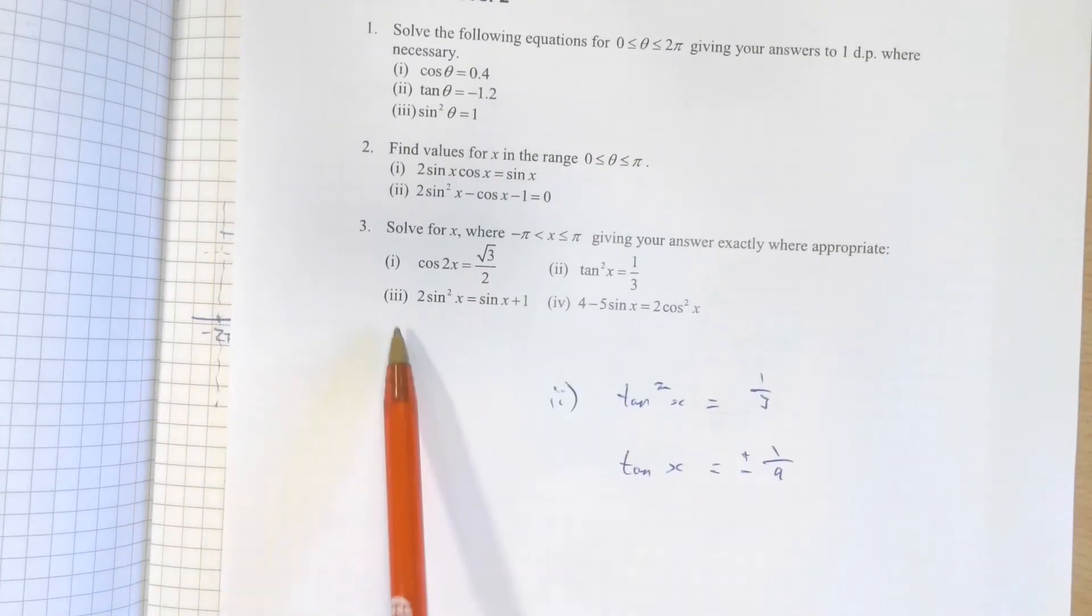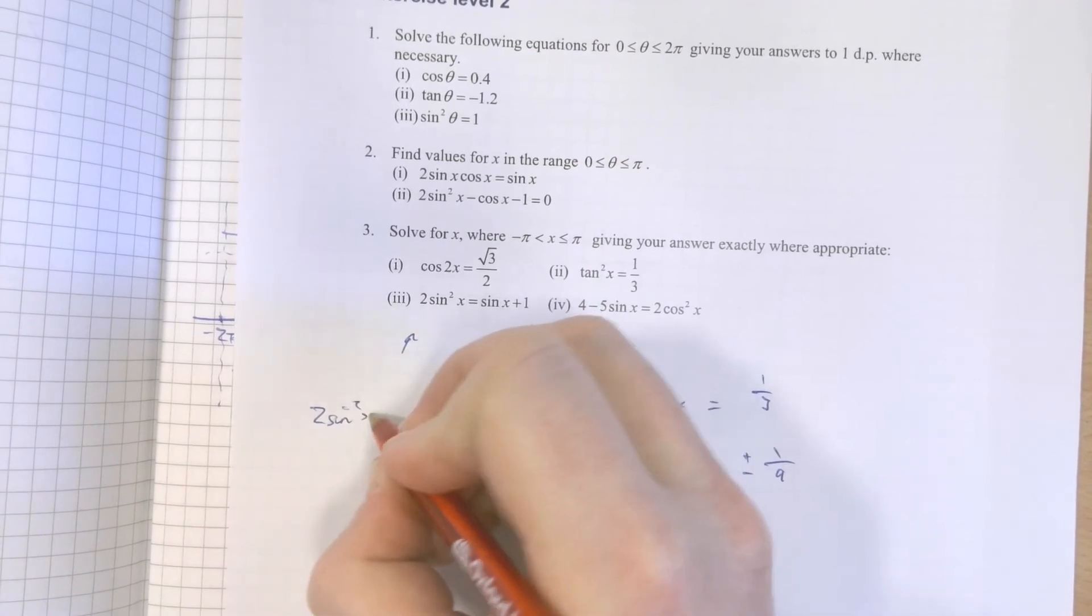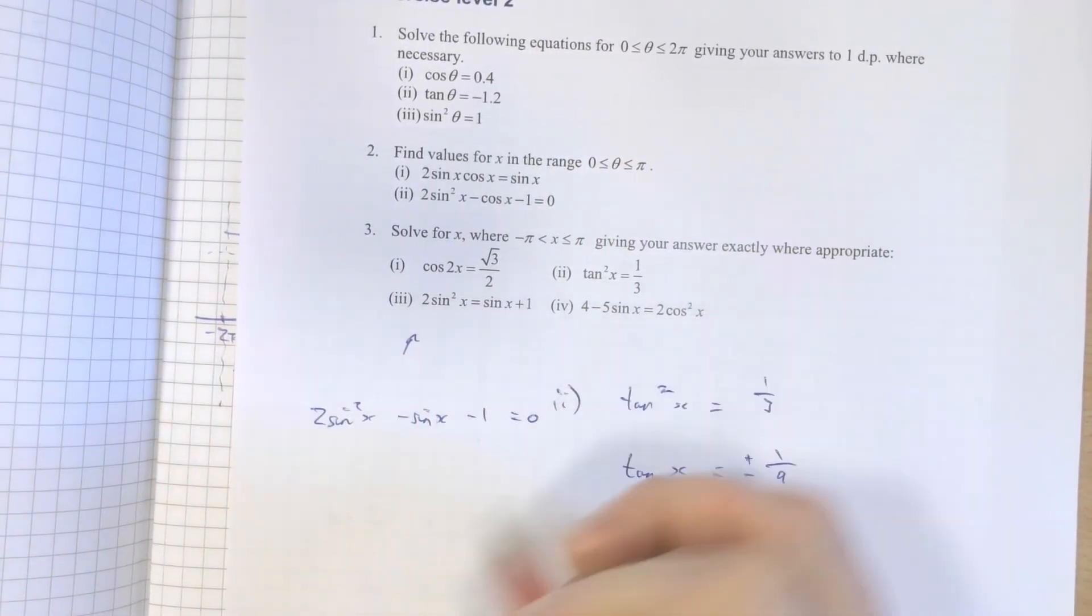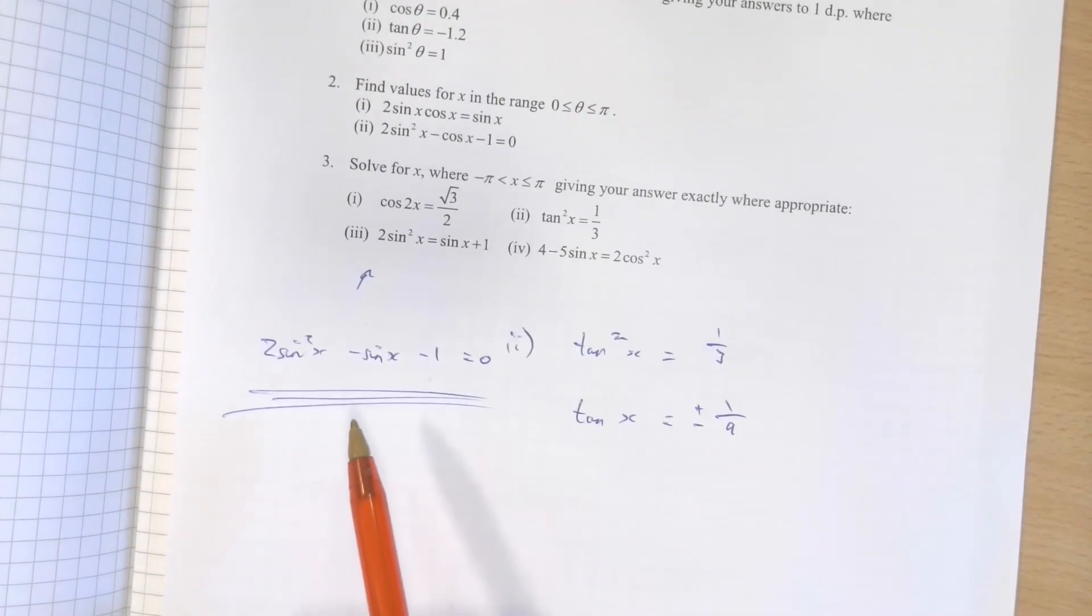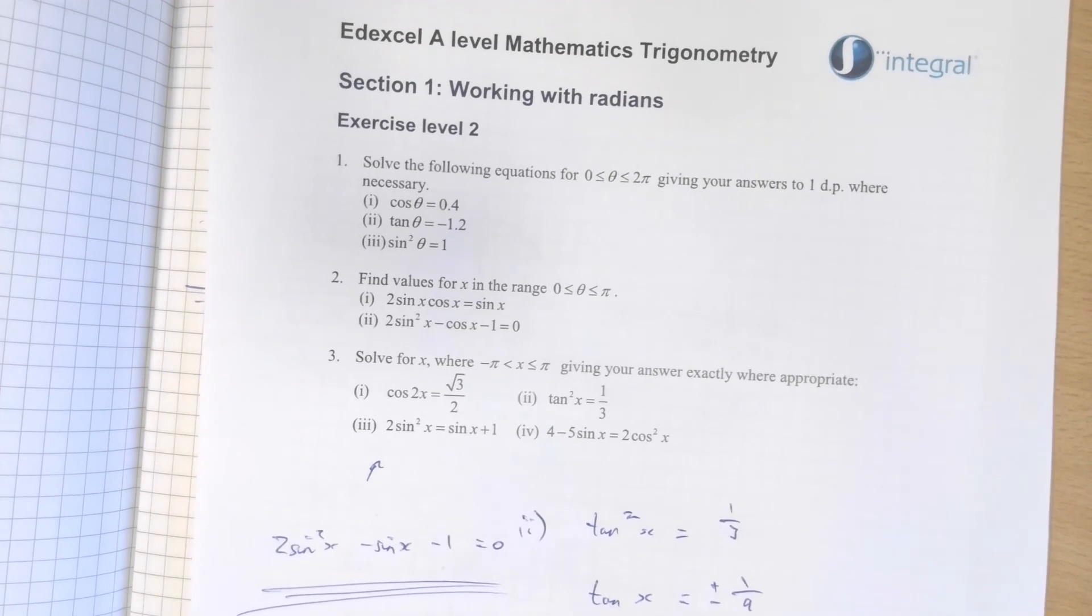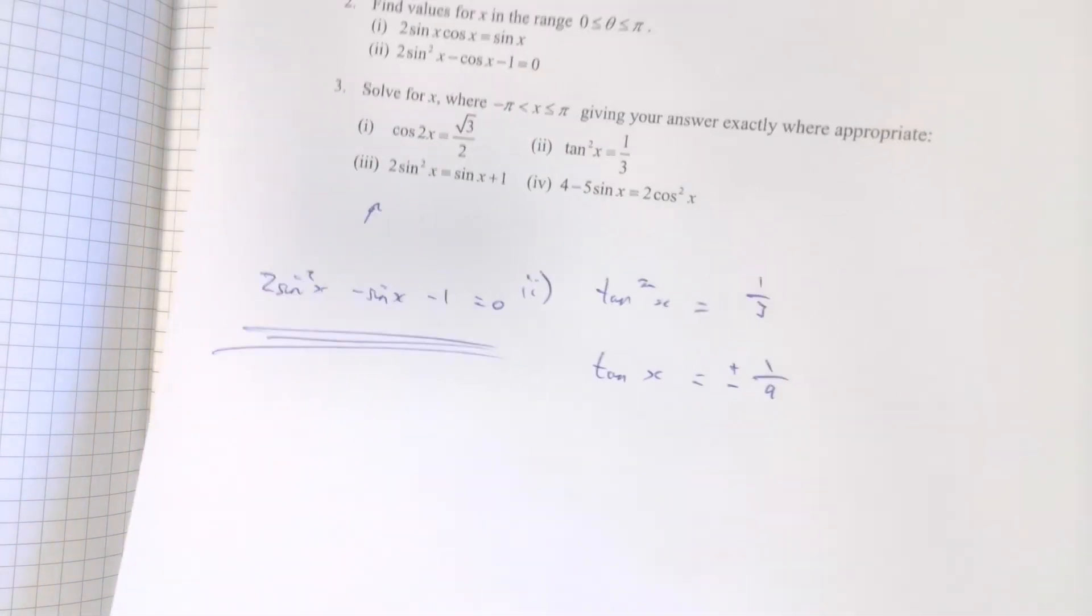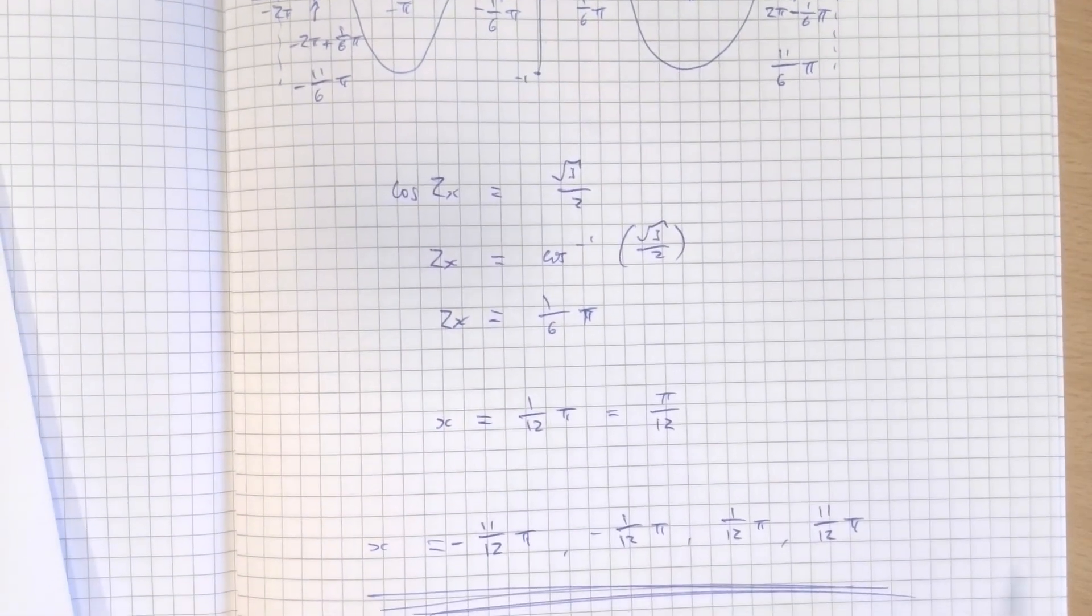And this question here: 2 sin²x equals sin x plus 1. If I rearrange this, I end up with 2 sin²x minus sin x minus 1 equals 0. That is a quadratic that you can solve. All of the questions that increase in complexity are using the skills you already possess mathematically. But it always comes down to this central idea.